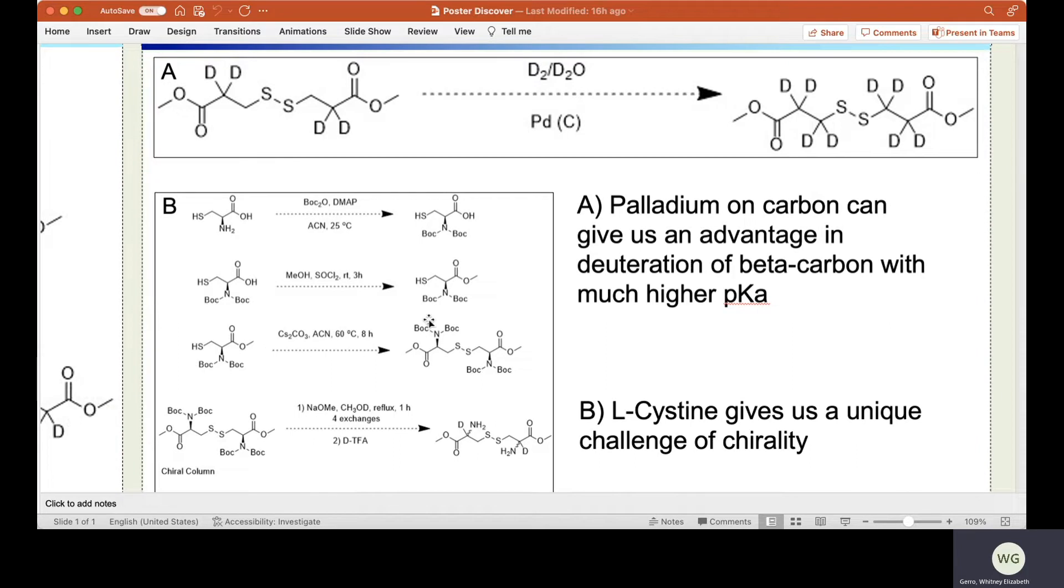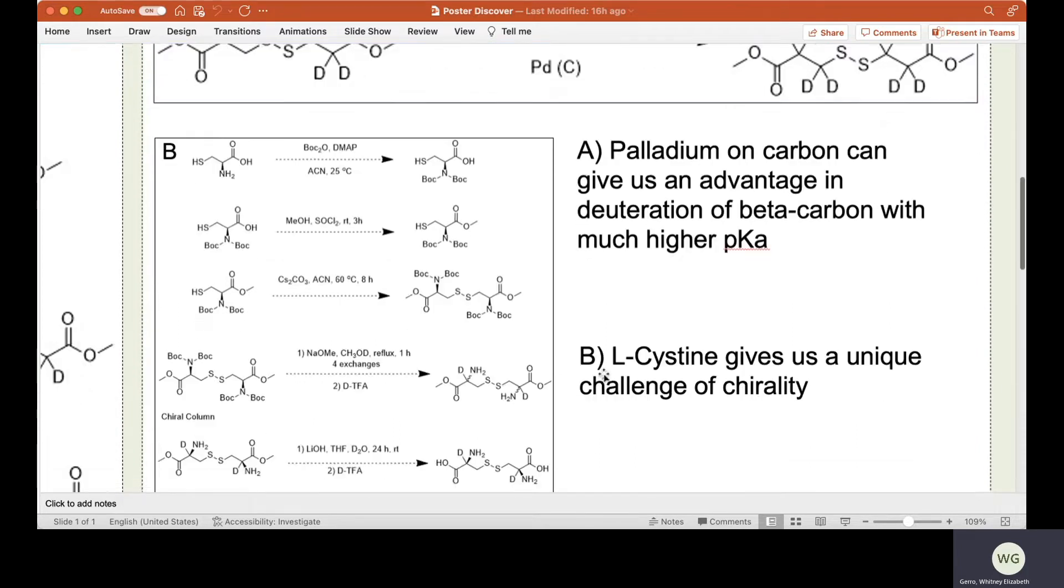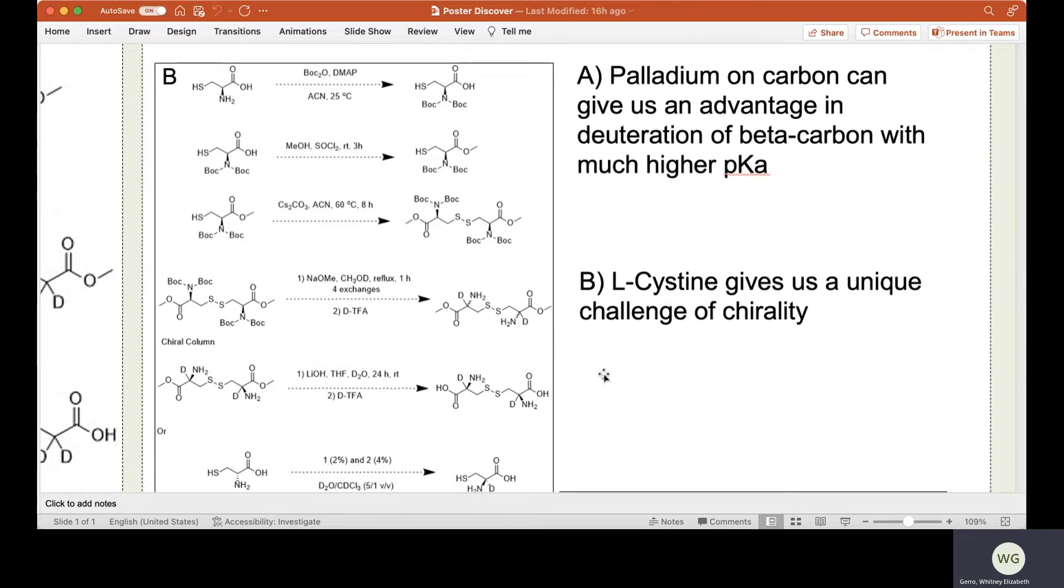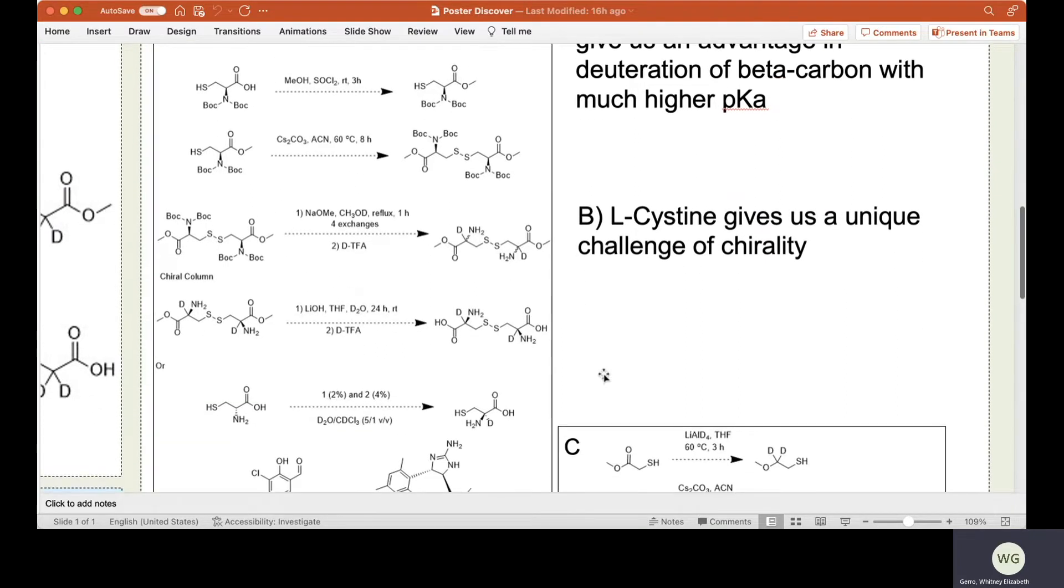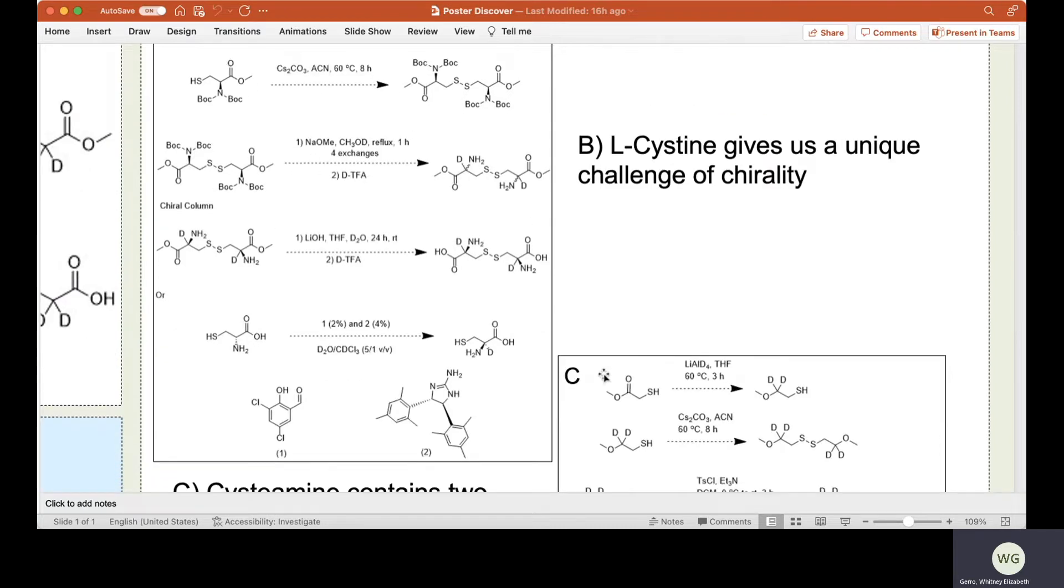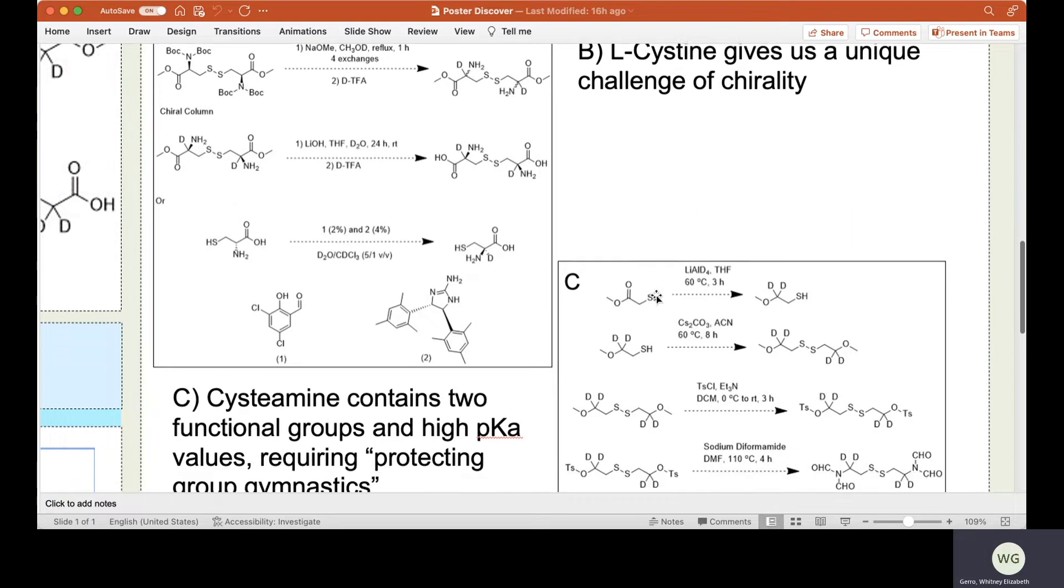Along with this, we are challenged with deuterating L-cysteine. The obstacle here is maintaining chirality of the compound. We have two options. One, repeating our previous synthesis and utilizing a chiral column in order to extract the different products, but this is difficult and expensive. Or two, we can use a chiral catalyst that can be synthesized in-house and via a chirality inverting procedure, we could begin with D-cysteine to hopefully end with L-cysteine.